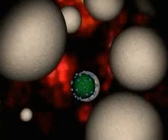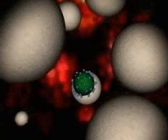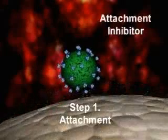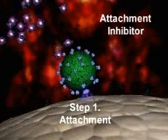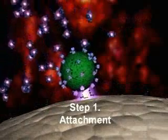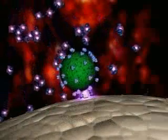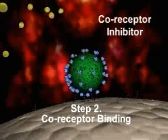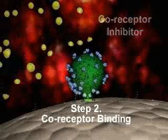HIV replication is a complex multi-stage process that includes crucial steps taking place on the exterior as well as the interior of the target host cell. The first three steps involved in cell entry are termed attachment, co-receptor binding, and fusion. Each step in the process is critical to successful viral reproduction and represents a potential target for antiviral drug development.